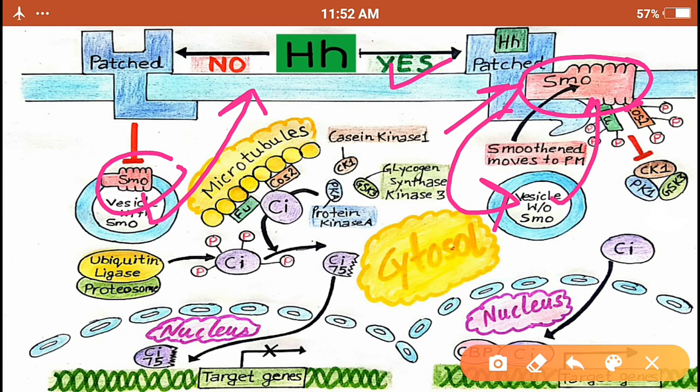is bringing the Fused protein and the Costal-2 protein to the plasma membrane. Then these proteins are phosphorylated by SMO. The increase in the phosphorylation state of these proteins, COS2 and Fused by SMO, does not allow the kinases CK1, PKA, and GSK3 to phosphorylate CI. And if this CI is not phosphorylated, it cannot be ubiquitinated by ubiquitin ligase, and hence the proteasomal degradation is